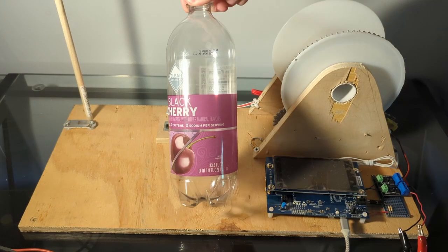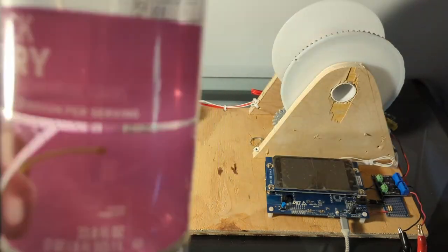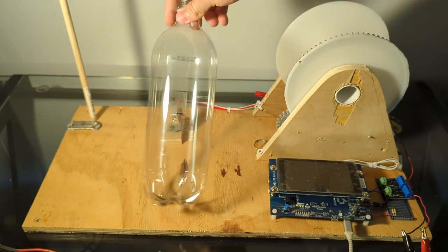Now that we've tested the machine, let's get on to cutting up the bottle so we can make the filament. This is the bottle I'm going to be using, it's a black cherry soda bottle. First thing we do is take the wrapper off.